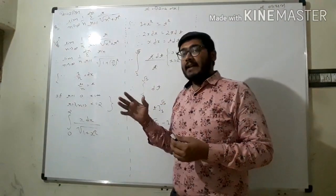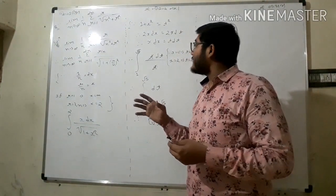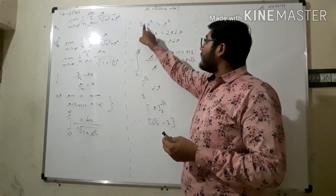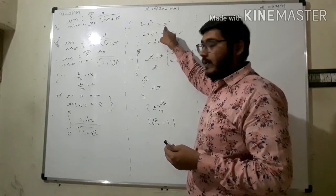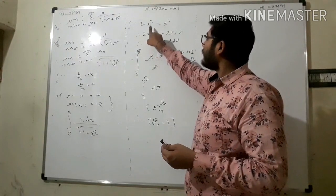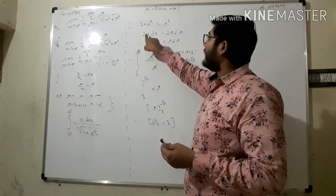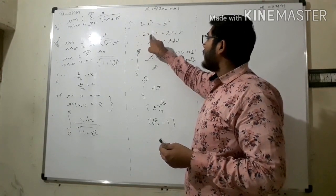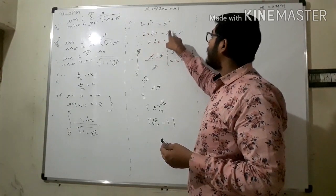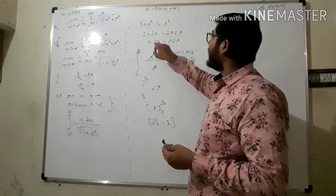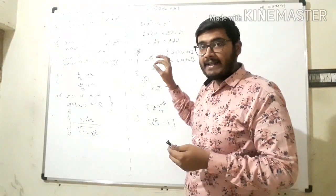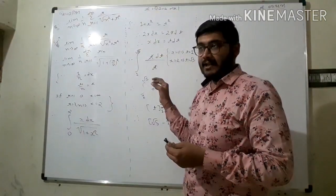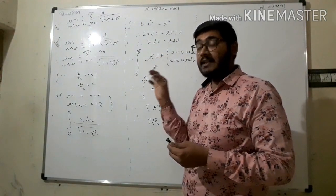Now the substitution moment: let one plus x squared equal to t squared. Taking the differential, we get x dx equal to t dt.